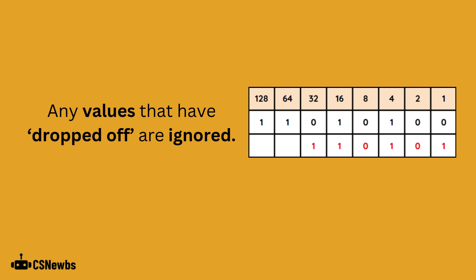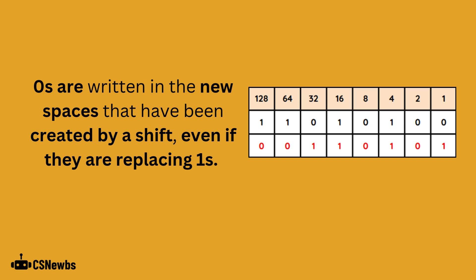By shifting two places to the right, that means the two values on the far right hand side will be dropped off and these values can be ignored. Zeros are always written in any new spaces that have been created by a shift, even if they are replacing ones.